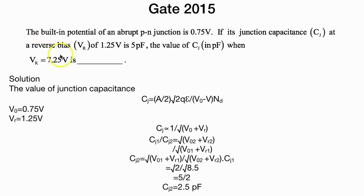With the formula, we can derive that the junction capacitance is inversely proportional to the square root of V_0 plus V_r.